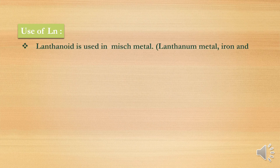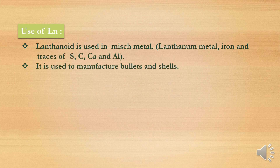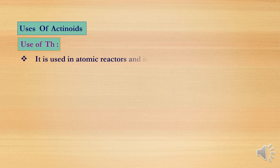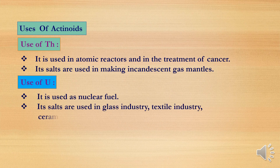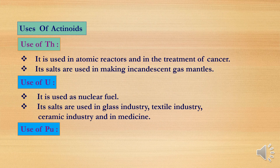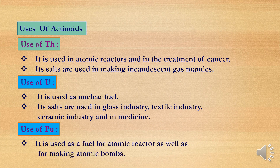Uses of lanthanides: lanthanide is used as misch metal (a mixture of lanthanum, iron, and traces of sulfur, carbon, calcium, and aluminum). It is also used to manufacture bullets and shells, and mixed oxides are used as catalysts. Uses of actinides — thorium is used in atomic reactors and in the treatment of cancer, and its salts are used in making incandescent gas mantles. Uranium is used as nuclear fuel and in the glass, textile, and ceramic industries, and in medicine. Plutonium is used as fuel for atomic reactors and for making atomic bombs.